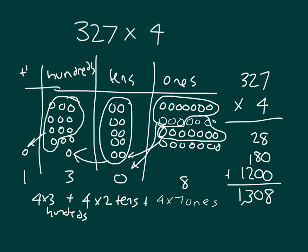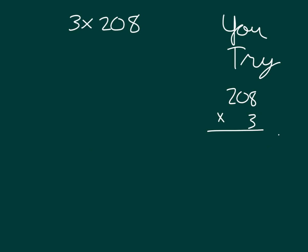So that's how we can model and show 327 times four. Okay, it's your turn to try. Go ahead and show your work for three times 208. Be sure to use a place value chart and also show your partial product multiplication. Pause the video while you do your work.